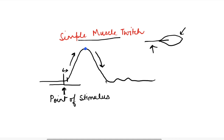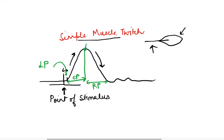There are three phases in simple muscle twitch. One is the latent period — that is the time taken from the point of stimulus to the start of the contraction. Then there is the contraction period, from the start of contraction to the maximum strength of contraction. Then there is the relaxation period, from the point of maximum contraction to the end of relaxation.